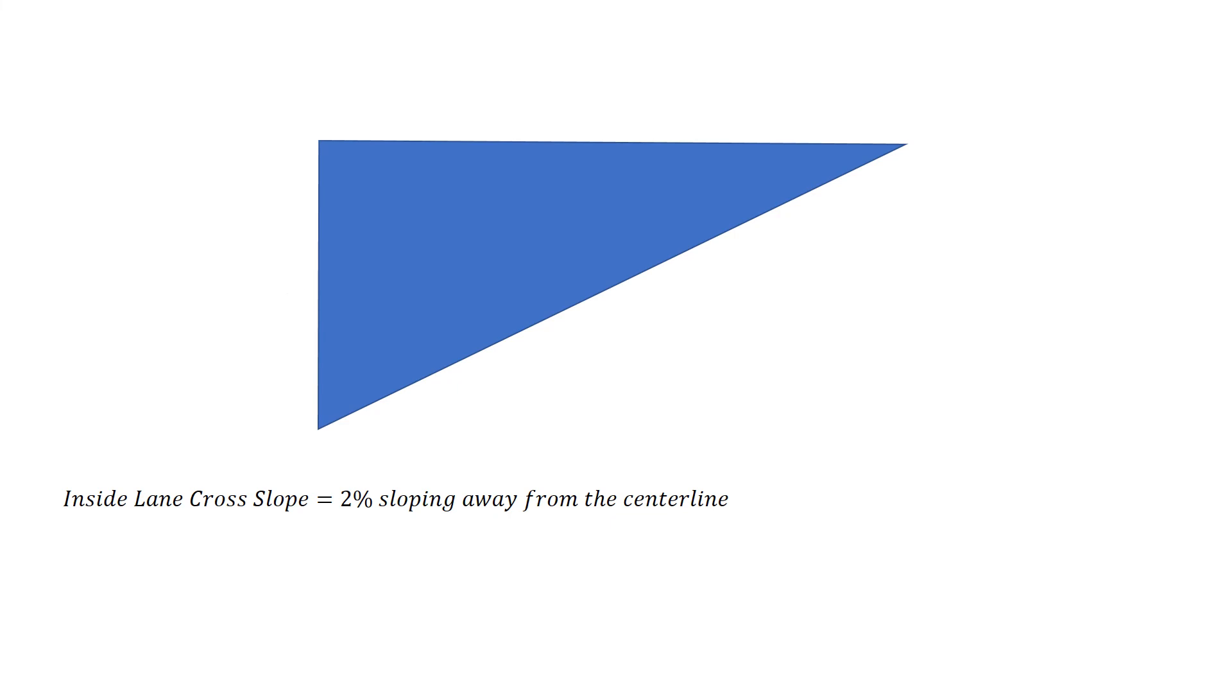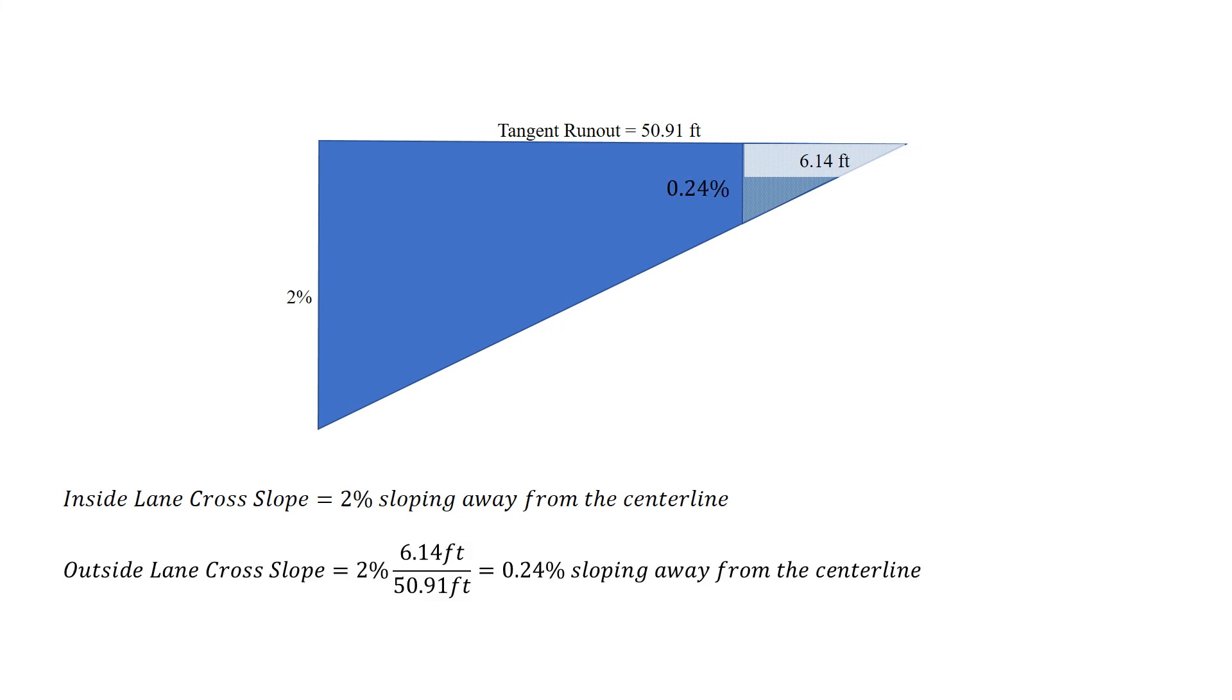We're going to take our triangle again now. We know that that larger triangle, and we're going to look for a similar triangle, but the larger triangle is 2%, and the tangent runout distance is 50.91 feet. Our similar triangle is smaller. We know that the length of the leg is 6.14 feet, and therefore we can calculate that other leg. So 2% times 6.14 divided by 50.91 feet gives us an outside lane cross slope of 0.24% sloping away from the center line.